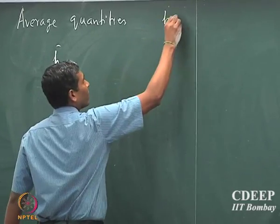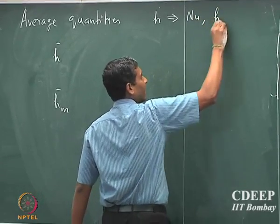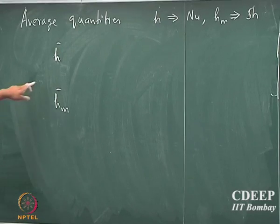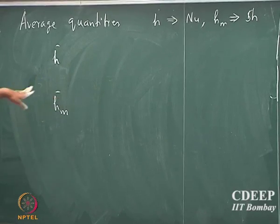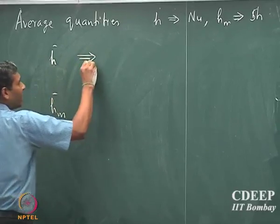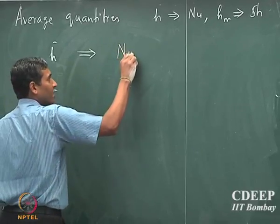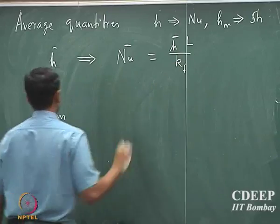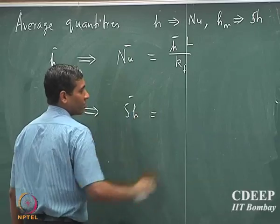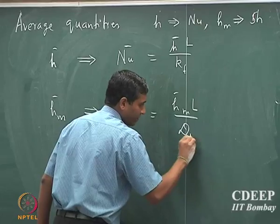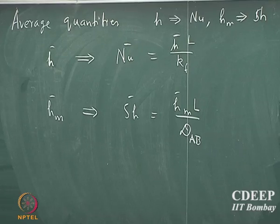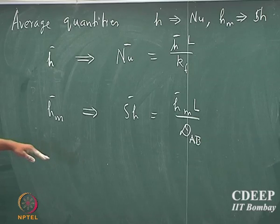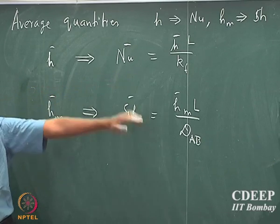To find the local heat transport coefficient you need Nusselt number, and to find the local mass transport coefficient you need Sherwood number. Therefore, we define the average Nusselt number as h̄·L/Kf and the average Sherwood number as H̄M·L/DAB. For all the different geometries discussed in the next several lectures, the ultimate goal is to find the average Nusselt number and average Sherwood number.